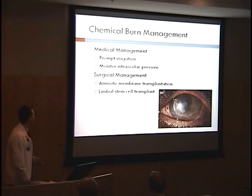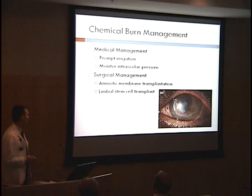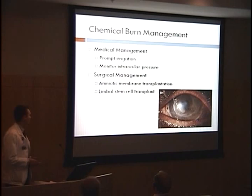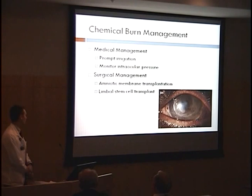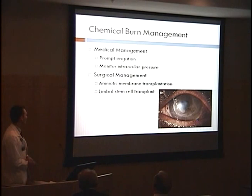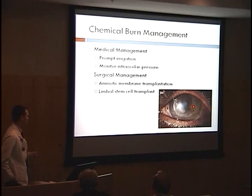For chemical burn management, you want to irrigate the wound. If there is a history of alkaline agent exposure, you want to monitor intraocular pressure because alkaline agents can cause an inflammatory reaction and precipitate acute glaucoma. Surgically, research suggests that amniotic membrane transplantation can decrease inflammation and promote epithelial healing. And since you can also get limbal stem cell deficiency from burns, a limbal stem cell transplant has been used to help promote corneal healing. One patient from a study had a limbal stem cell transplant and amniotic membrane transplant after a sulfuric acid burn, and a picture taken a month and a half after surgery shows a stable ocular surface.